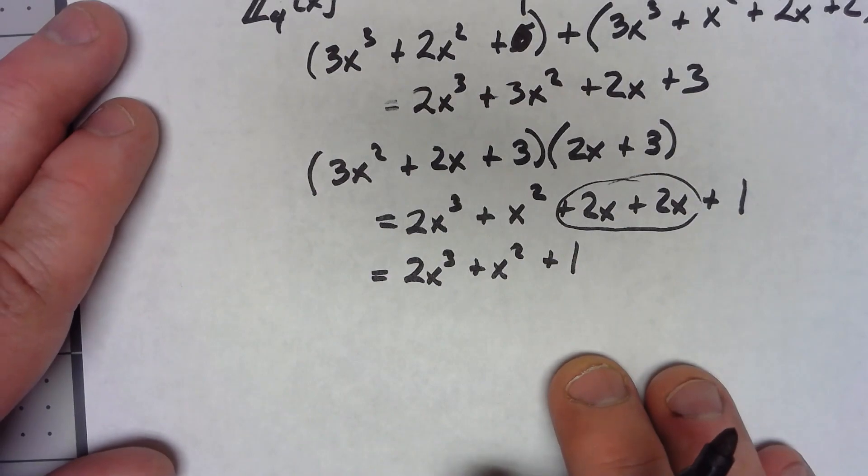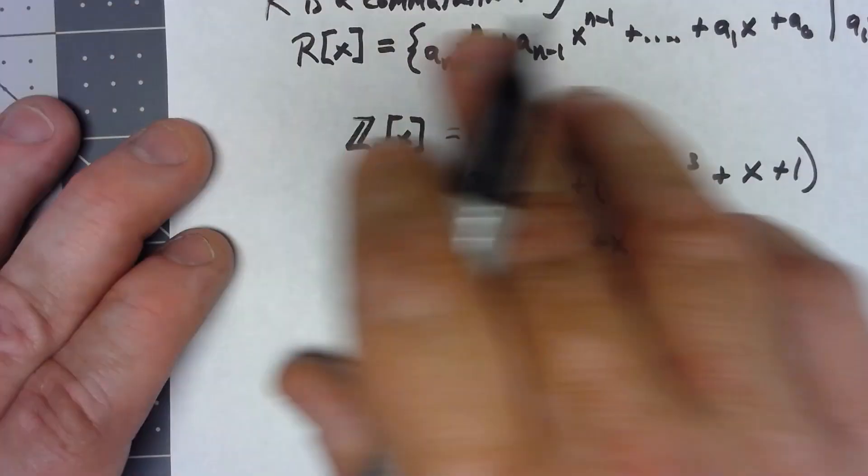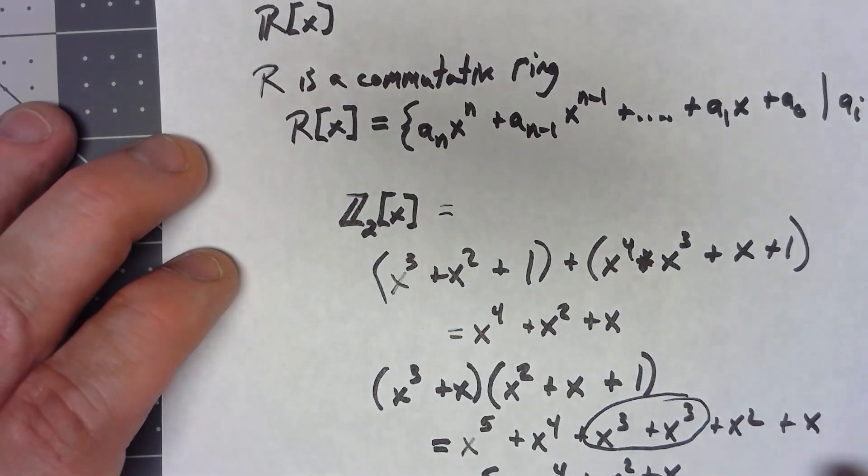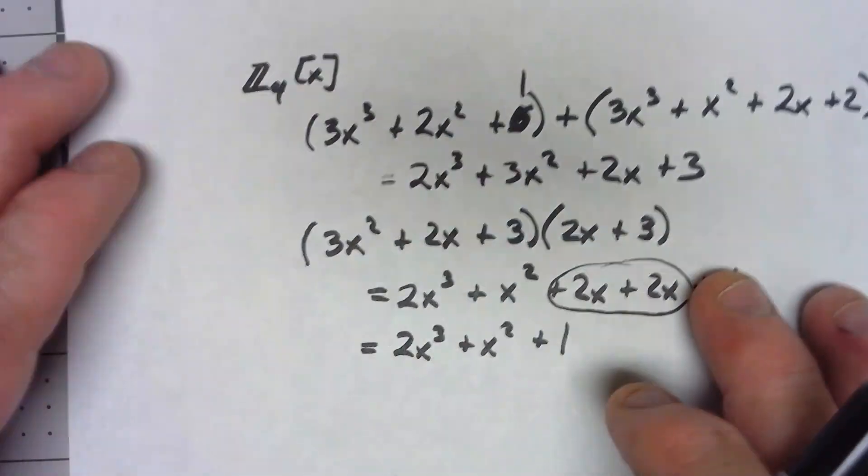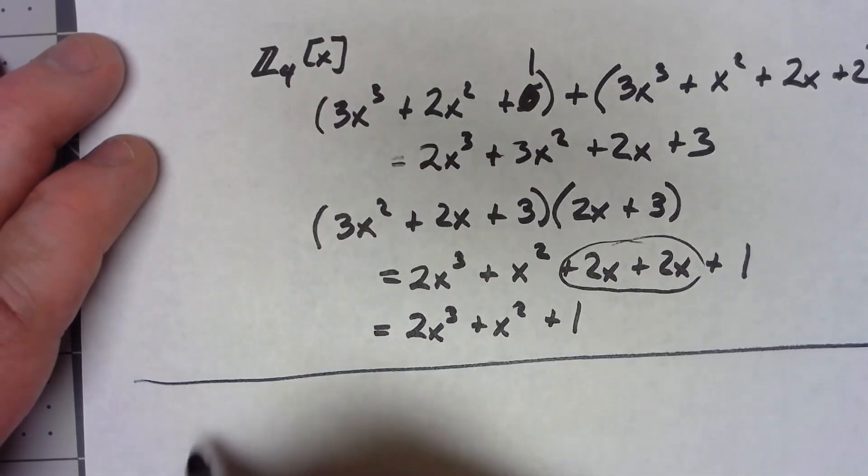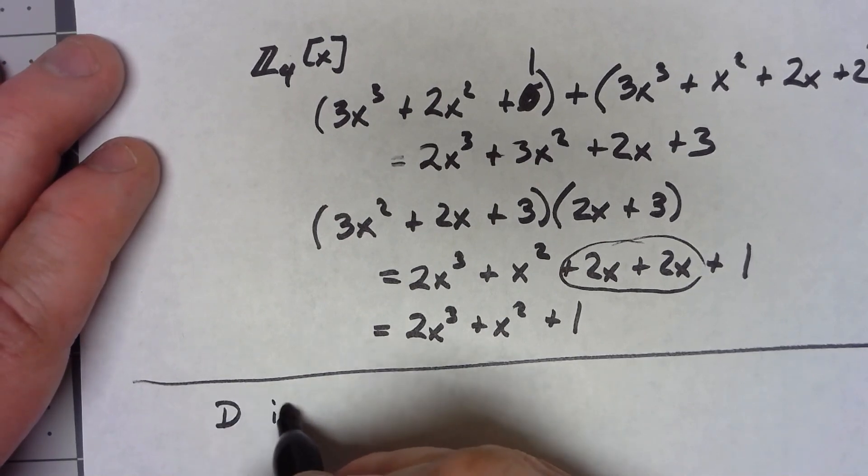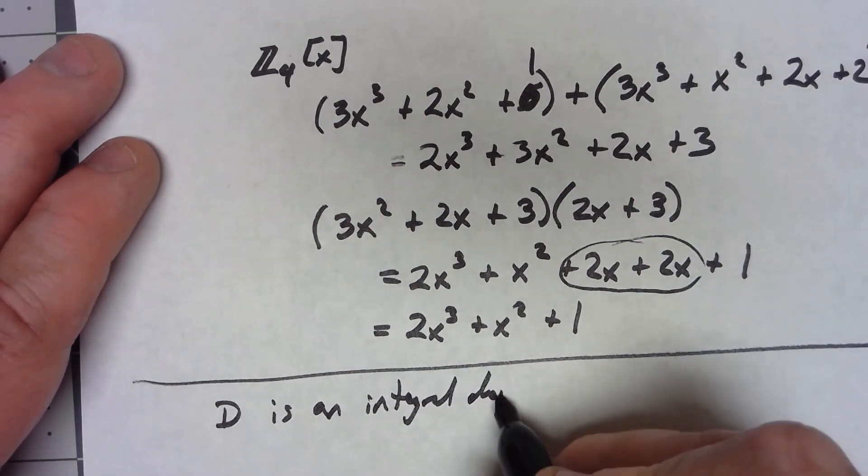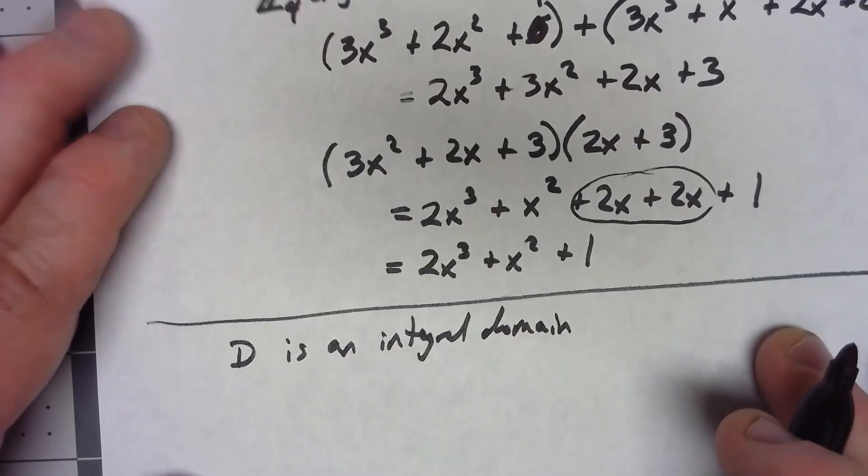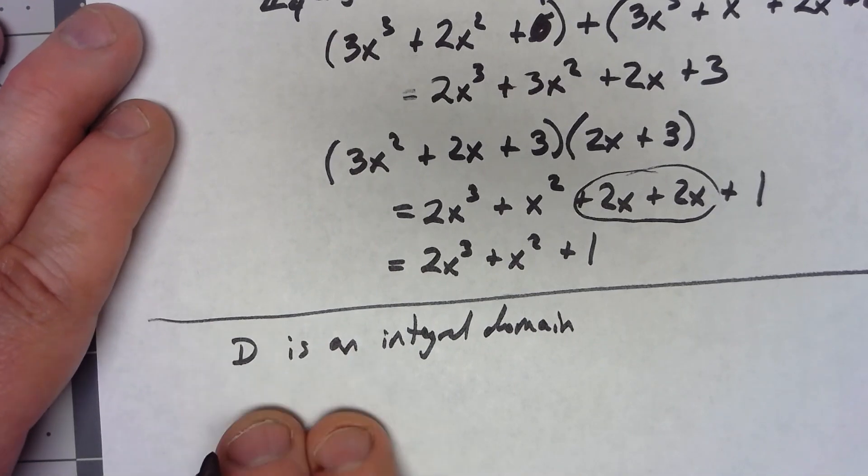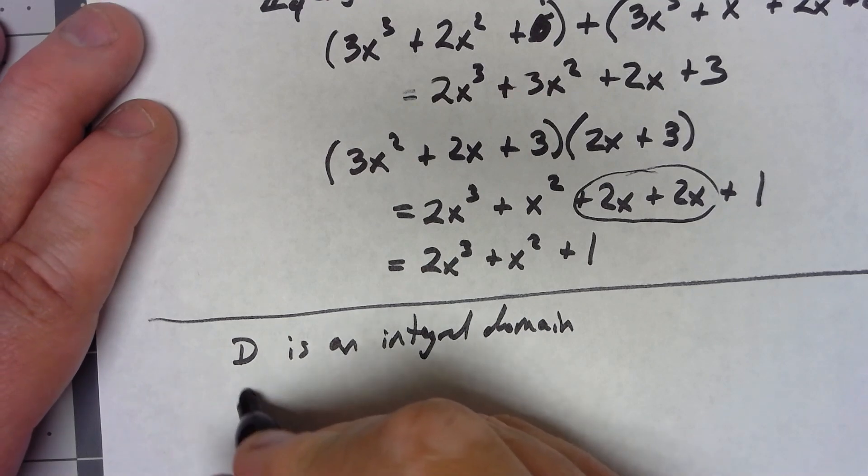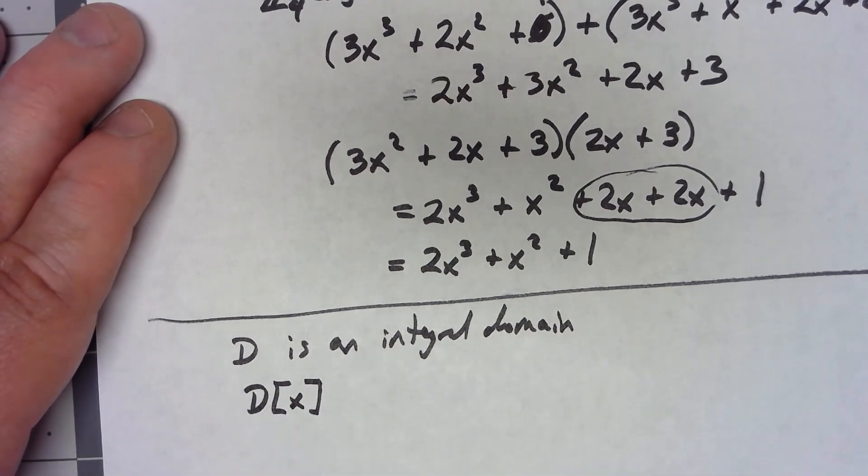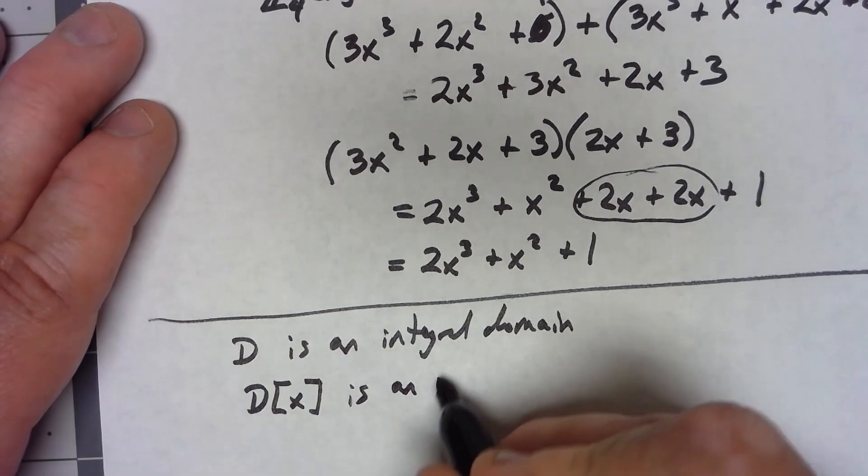Now, one interesting thing is this works for any commutative ring. We can create this ring of polynomials, but if we start with an integral domain, which again means it has a unity and it has no zero divisors, then when I create the ring of polynomials from that, then that is also an integral domain.